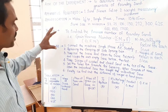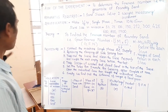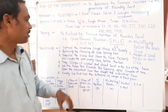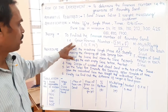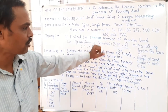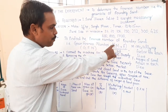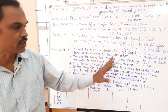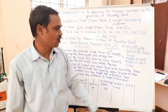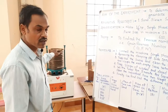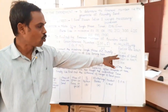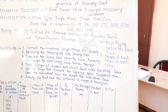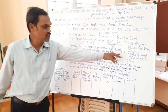Now we start the basic theory of this experiment to find out the fineness number of a foundry sand. The formula to find out the fineness number is: summation of m multiplied by f, divided by summation of f. Here, m is the multiplying factor of each sieve, and f is the weight of sand retained in each sieve after sieving.